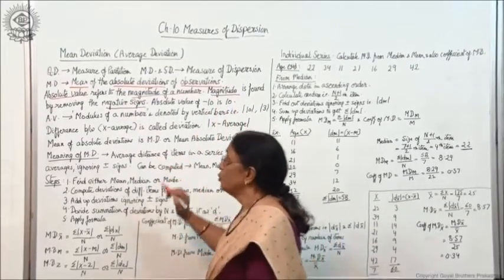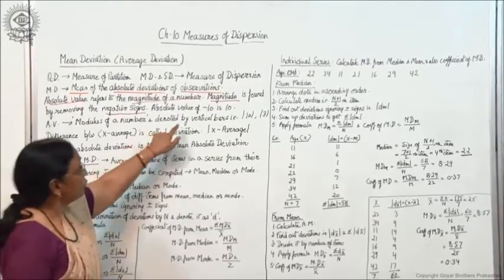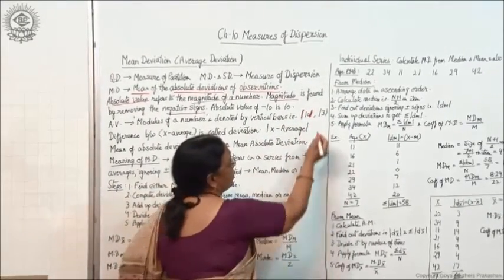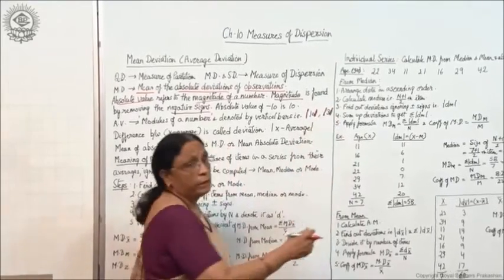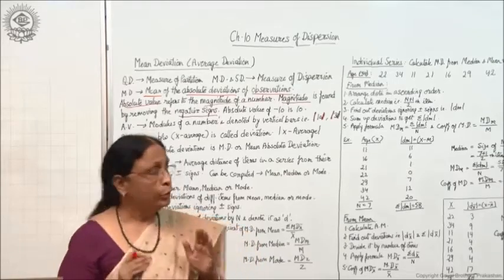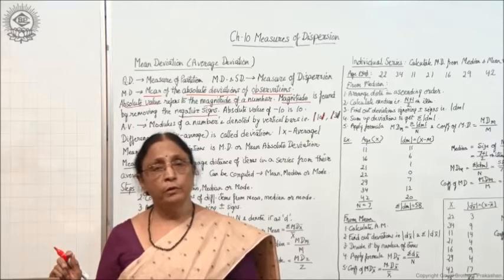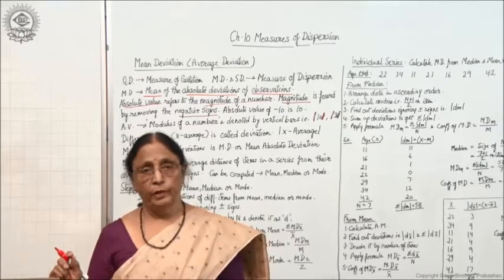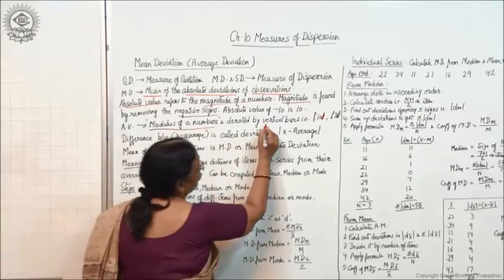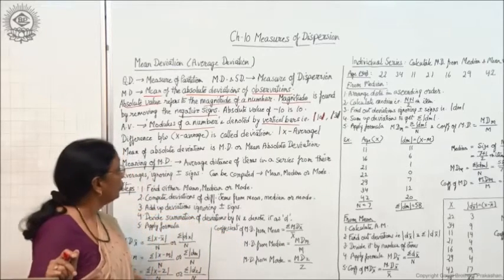So minus 10 becomes 10. Absolute value is also known as the modulus of a number. Modulus is denoted by vertical bars — if you put 2 vertical bars around a figure, say 3, this indicates it is a modulus. These vertical bars mean you have ignored minus signs and are taking the modulus. Absolute values are always positive.